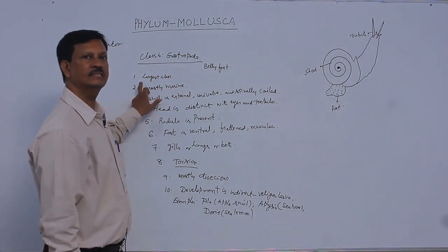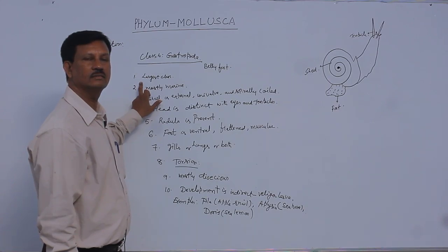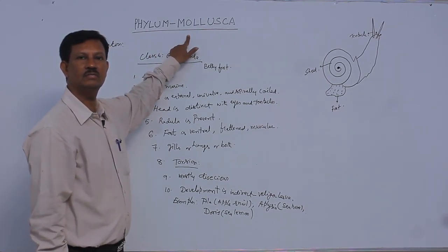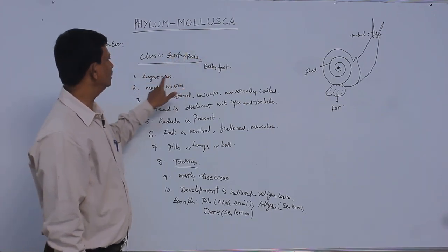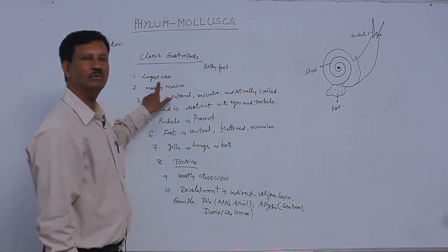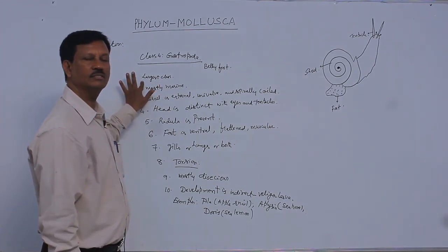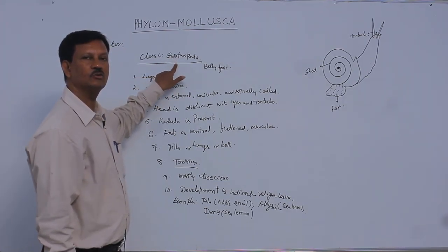This is the largest class. Phylum Mollusca is divided into seven classes. Out of these seven classes, a large number of animals are found in this class, hence Gastropoda is known as the largest class.